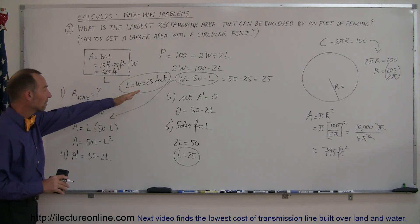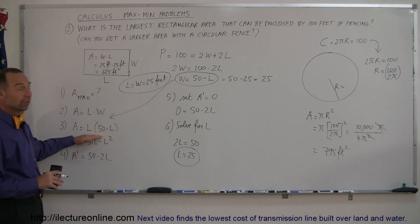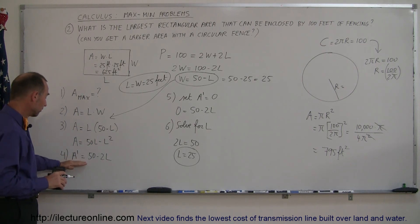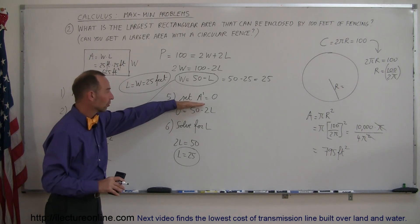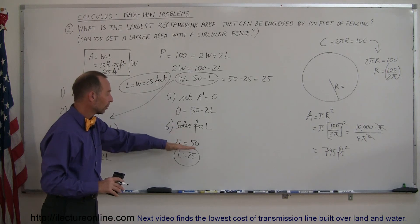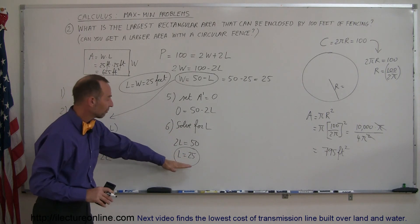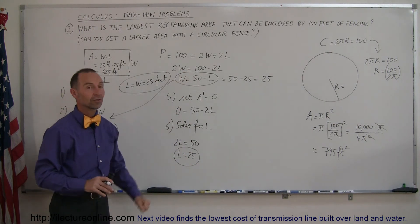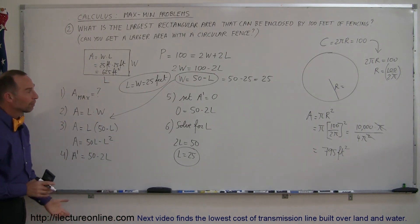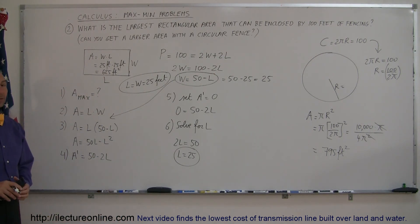find an equation with the given variables for the thing that you're trying to maximize. Then, using a constraint, eliminate all but one of the variables. Then you take the derivative of that equation. Then you set the derivative equal to zero, and then you solve for the variable. And then, of course, once you have this value, using your constraint, you can solve for the other variables. But that's the general way in which you solve maximum problems.